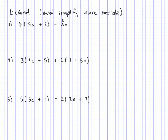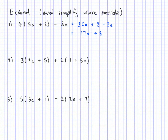With these next examples I will actually need to expand and then simplify, because there will be like terms to collect. So expanding the first one: 4 times 5a gives 20a, and 4 times 2 is plus 8. Then the takeaway 3a from the original expression is still there. Now collecting like terms — 20a takeaway 3a — gives us 17a, and the plus 8 can't combine with the a terms, so the final answer is 17a plus 8.